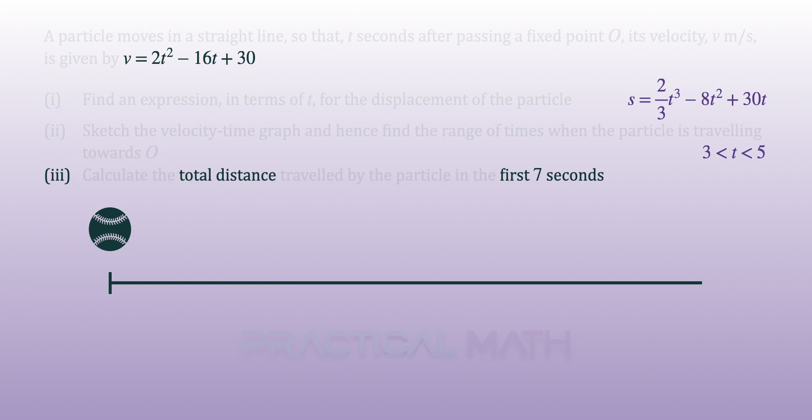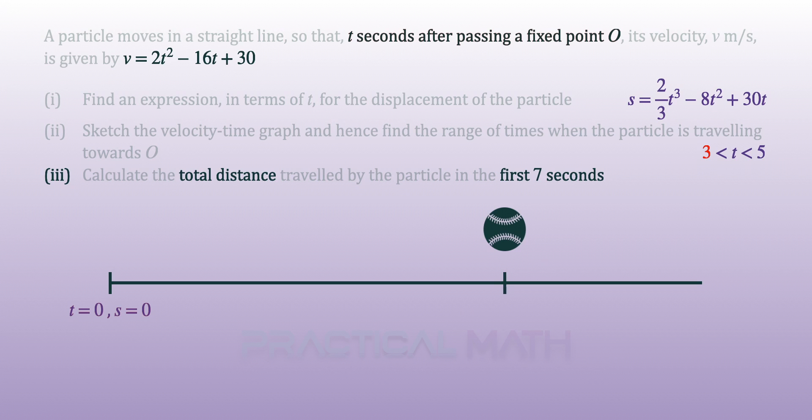To find total distance, we need a displacement diagram to illustrate the motion of the particle. We knew that from part 1, when t equals 0, displacement equals 0. From part 2, we found that particle changes its direction at t equals 3. Replacing t equals 3 into the displacement equation, displacement is 36. This part of the journey is 36 meters.